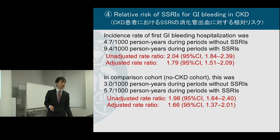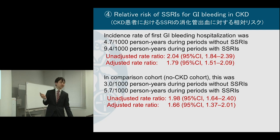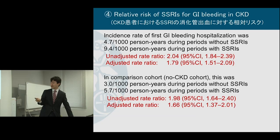So how to interpret the results? I expected that if SSRIs were really risky in CKD patients, the adjusted rate ratio should be 3 or 4. But the reality was slightly different from the non-CKD cohort but not dramatically so. That's good for patients and doctors, but bad news for me — medical journals like sensational findings, so this kind of result is unlikely to be accepted by high-impact journals.